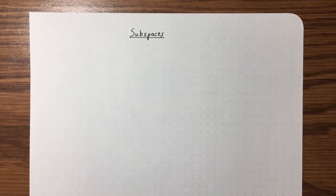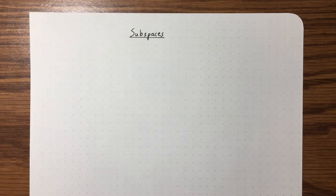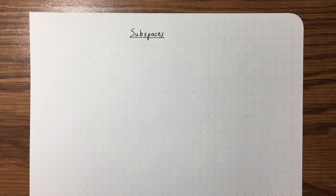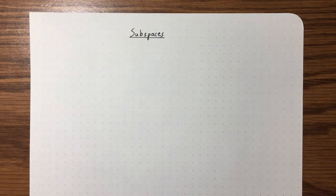This lecture is going to be on subspaces. We've talked about how a system of linear equations can have either 0, 1, or infinitely many solutions, and those are the only three possibilities. What we'd like to start talking about now is: suppose our system has infinitely many solutions — what does the space of solutions actually look like in our vector space? Similarly, we've been talking about linear transformations, and we'd like to better understand what a linear transformation is actually doing to a vector space.